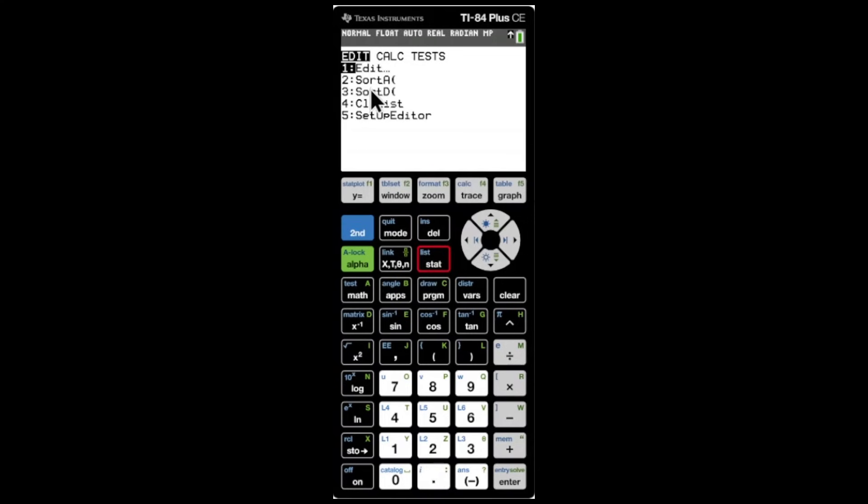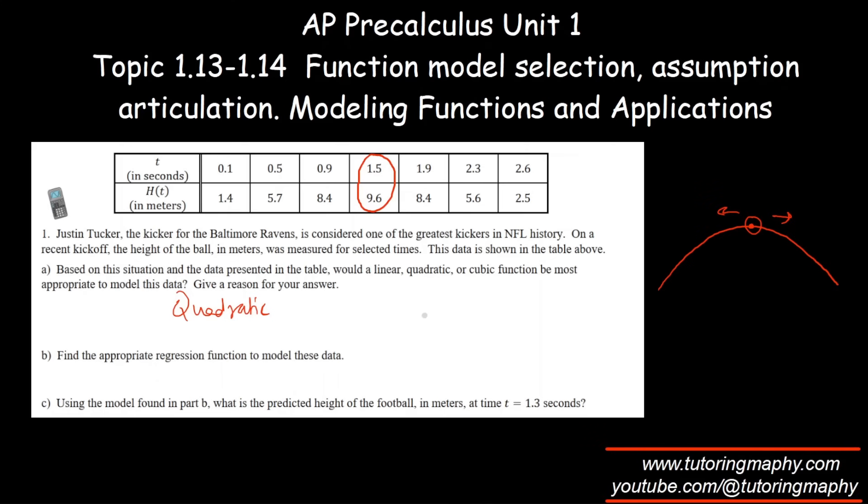Once we click on STAT again, we press the right key to go into the CALC option, and then we go down into the quadratic regression. Option 5 is quadratic regression. We click on enter. We don't really change anything because L1 and L2 are already our x and y list, and we click on calculate.